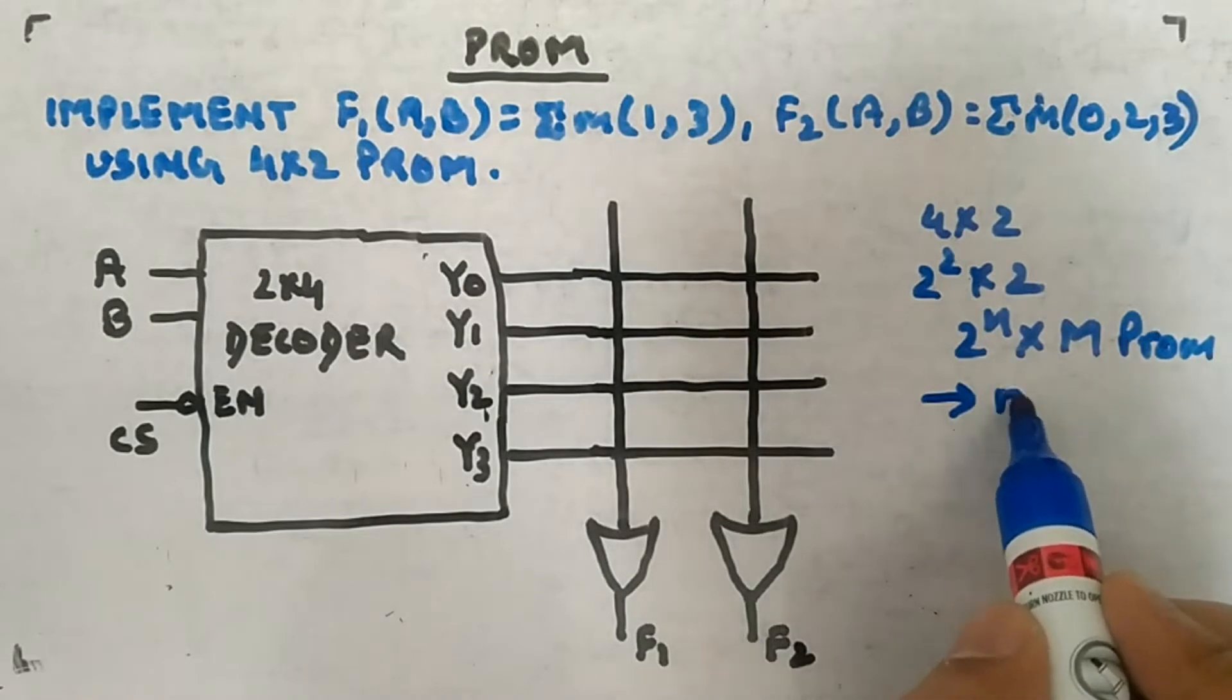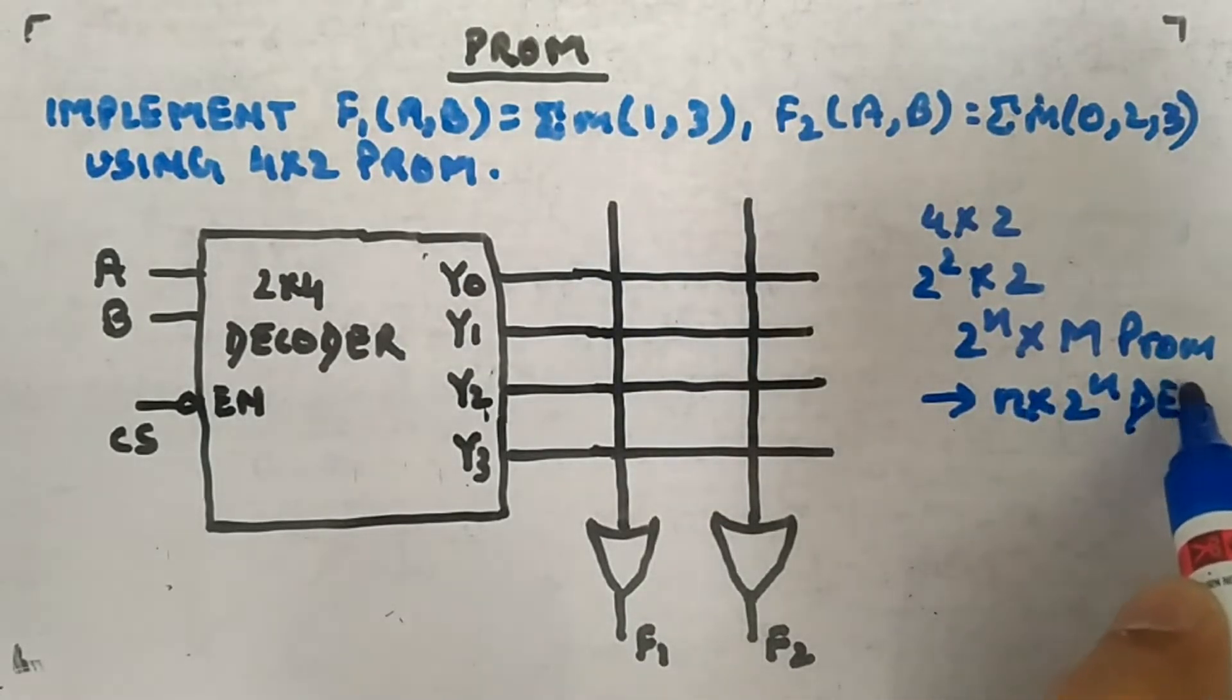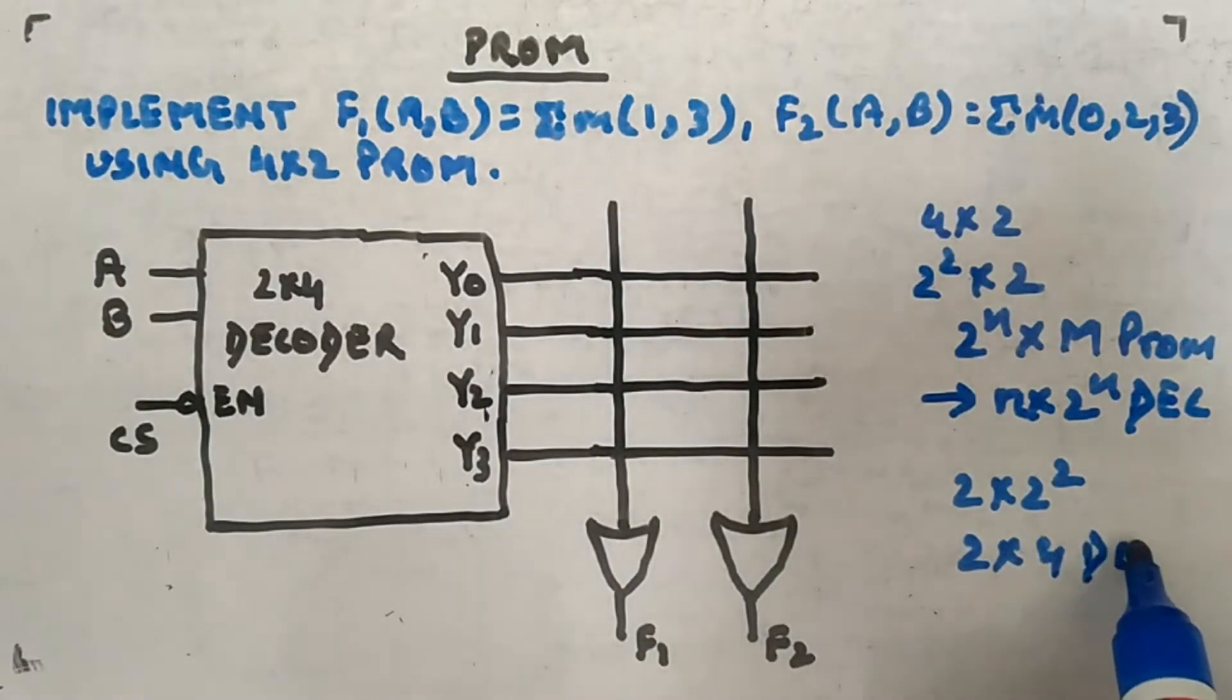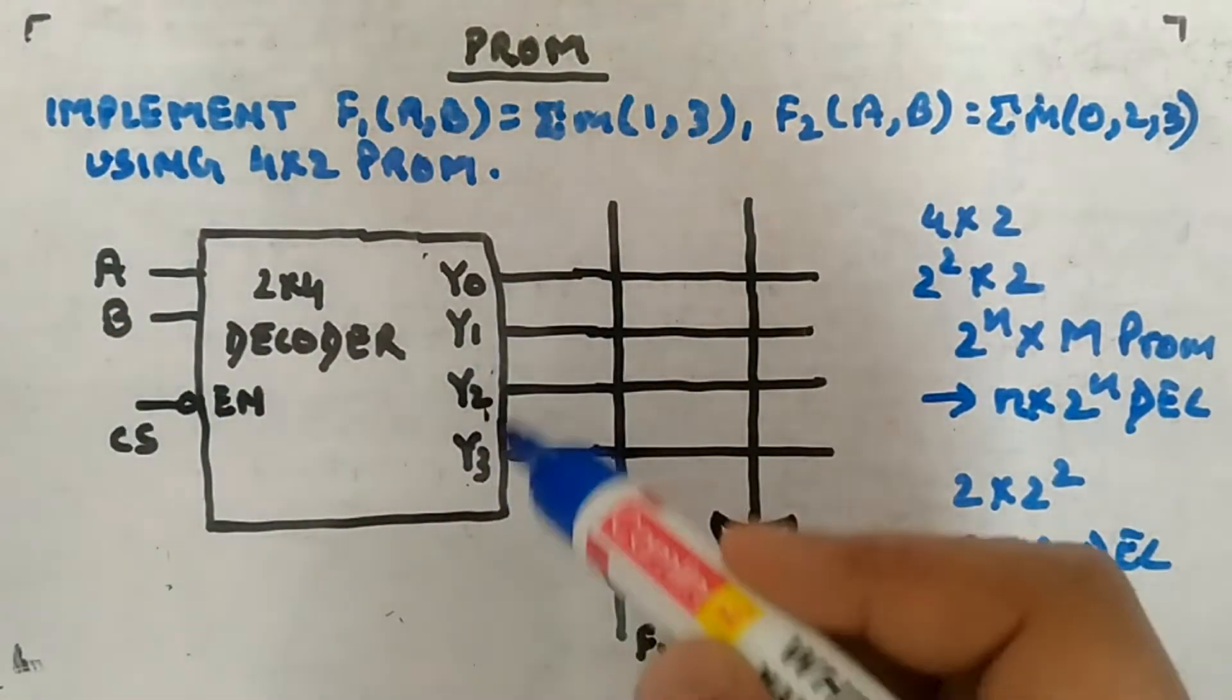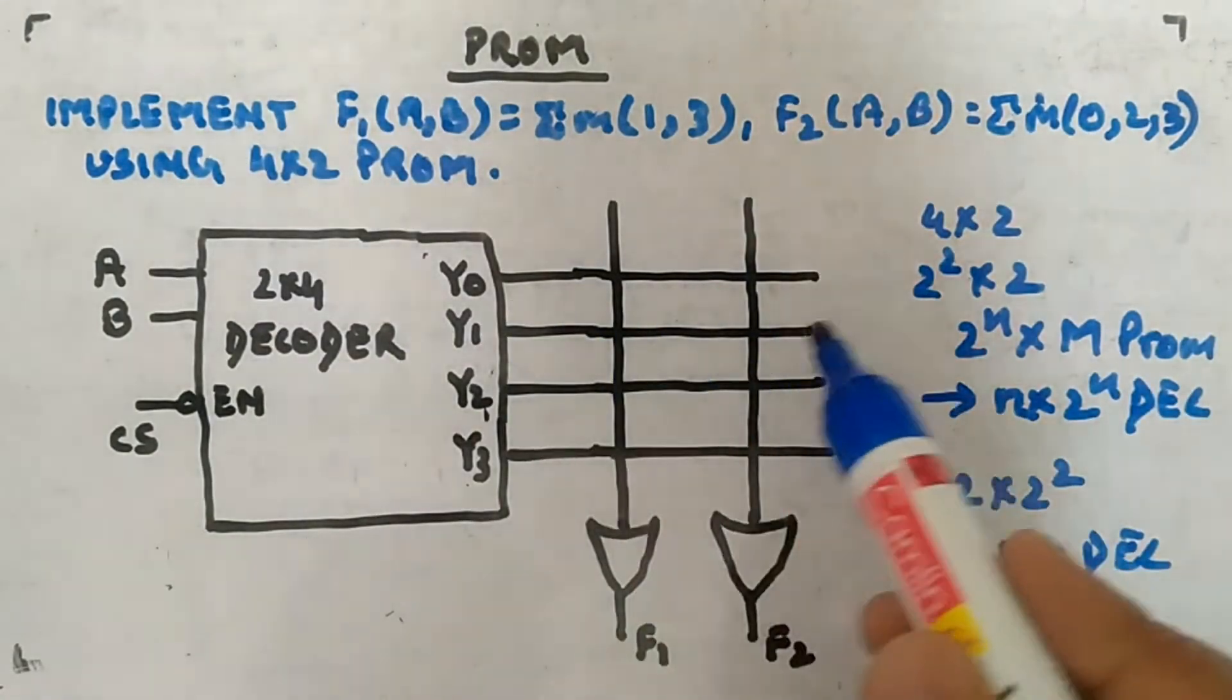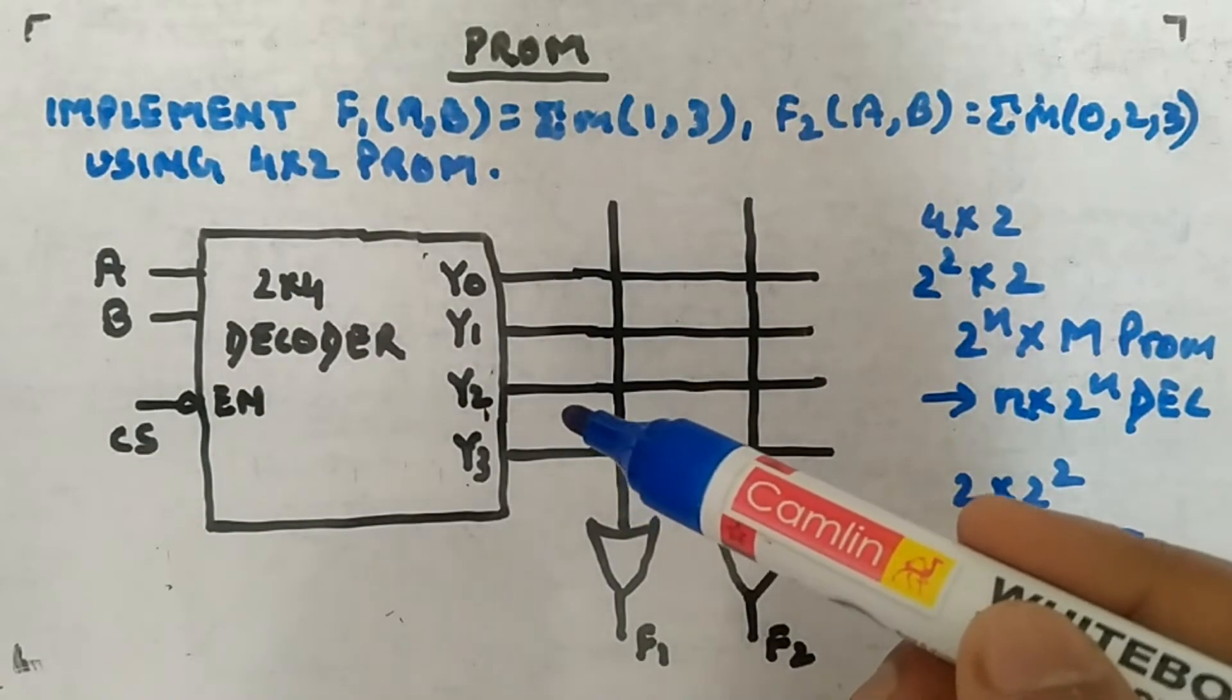So n value is 2, so you need 2×2 to the power 2, that is 2×4 decoder. I have made a 2×4 decoder with enable. You can see the lines: 4 outputs are there, for each combination one of them will be high and others will be low.